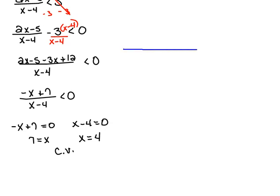Now we're using the same procedure as before, where let's say here is 4 and here is 7. So we're looking at what's going on in those different areas or regions. Let's try something to the left of 4, like let's say 0.